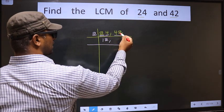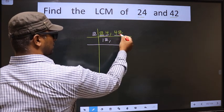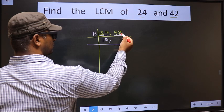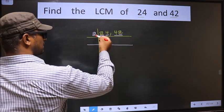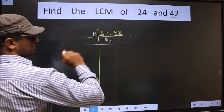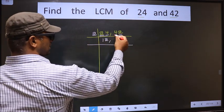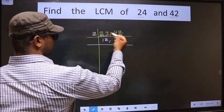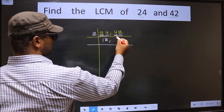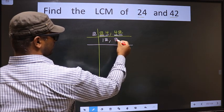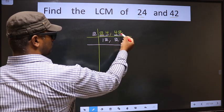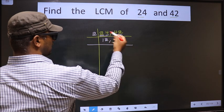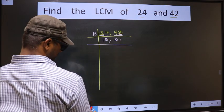Now the other number 42 — last digit 2, ends in an even digit, so this number is divisible by 2. The first number is 4 — when do we get 4 in the 2 table? 2 times 2 is 4. The other number is 2 — when do we get 2 in the 2 table? 2 times 1 is 2.